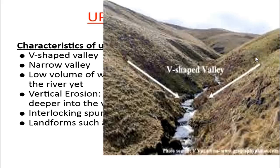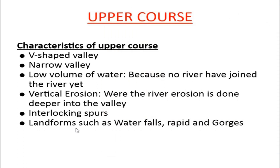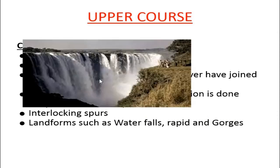In the upper course you also find interlocking spurs. What usually happens is, as the river flows downstream, sometimes it comes in contact with resistant rocks. When that happens, nature makes things easier — the river will go around those more resistant rocks, looking for the easiest path as it moves downstream. That creates what we call interlocking spurs. Within the upper course, you also find landforms such as waterfalls, rapids, and gorges.